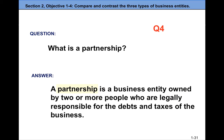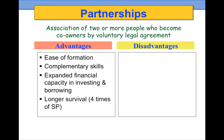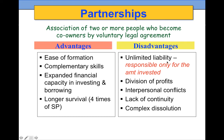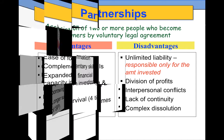A partnership is a business entity owned by two or more people who are legally responsible for the debts and taxes of the business. Advantages include complementary skills, greater ability to invest and borrow, and partnerships survive four times longer than sole proprietorships. Disadvantages include unlimited liability shared among partners, and the biggest issue is often interpersonal conflicts — going into a partnership with a best friend or spouse can lead to problems determining who is responsible for what and how to handle a partner wanting to exit. So it's very important to have a legal contract.